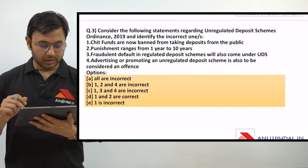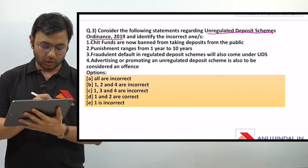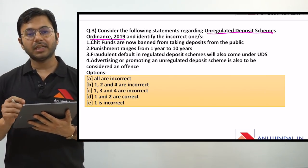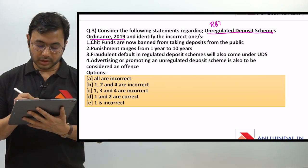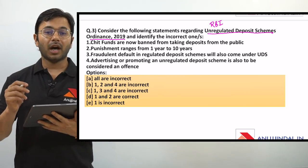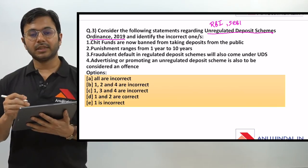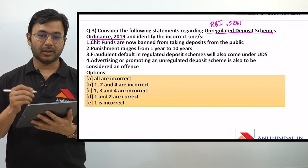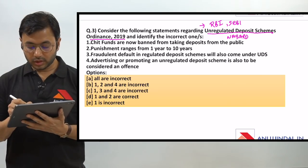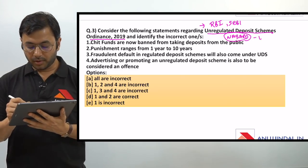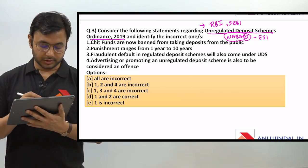Let us come to the third question. Consider the following statements regarding Unregulated Deposit Schemes Ordinance 2019 and identify the incorrect one. This question holds a lot of importance, and this topic also holds a lot of importance for the RBI and SEBI examinations because it is directly connected with Indian financial markets. In NABARD as well, since this is an ordinance, it can be asked in the ESI section.